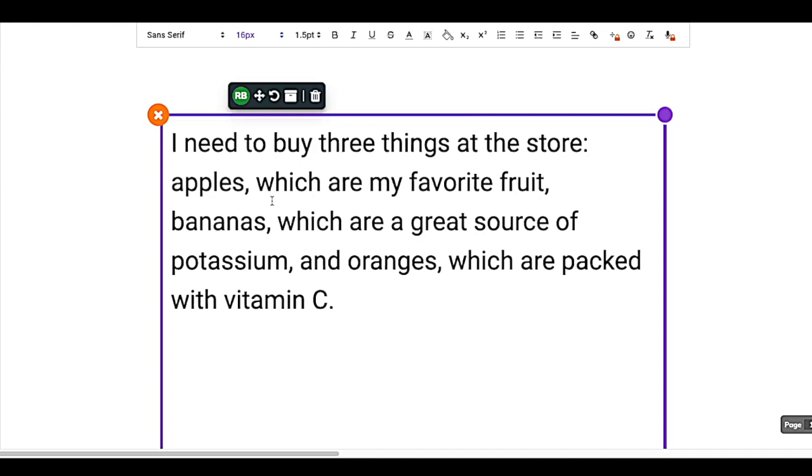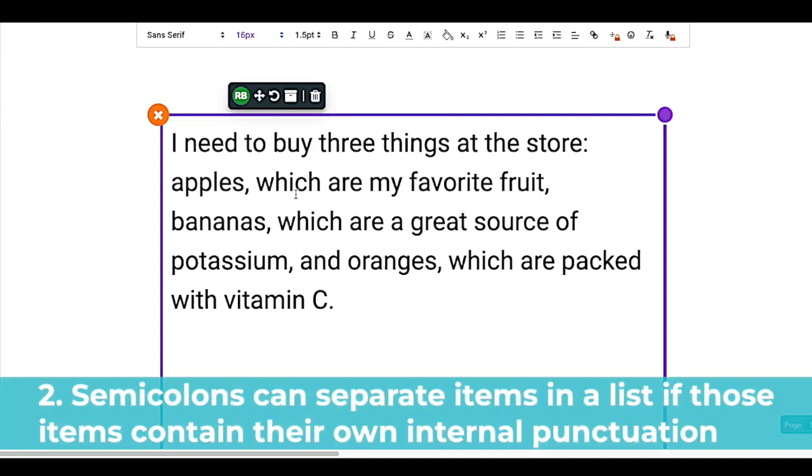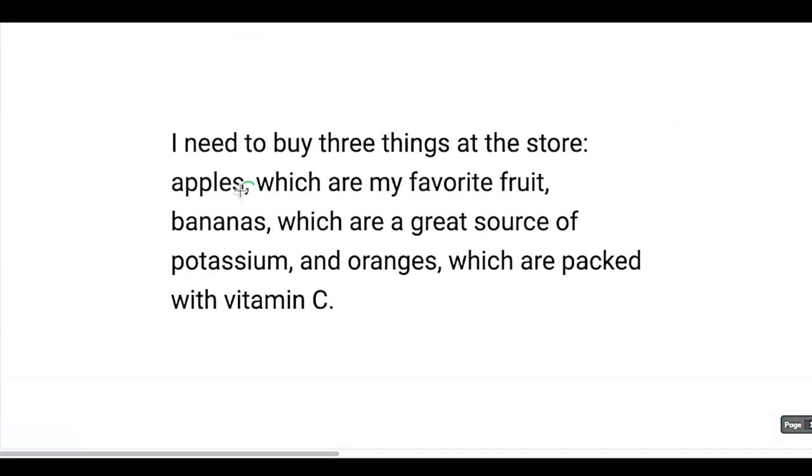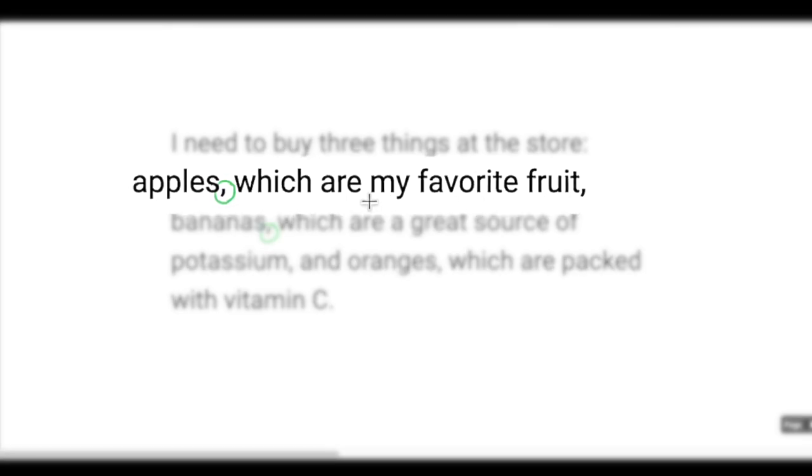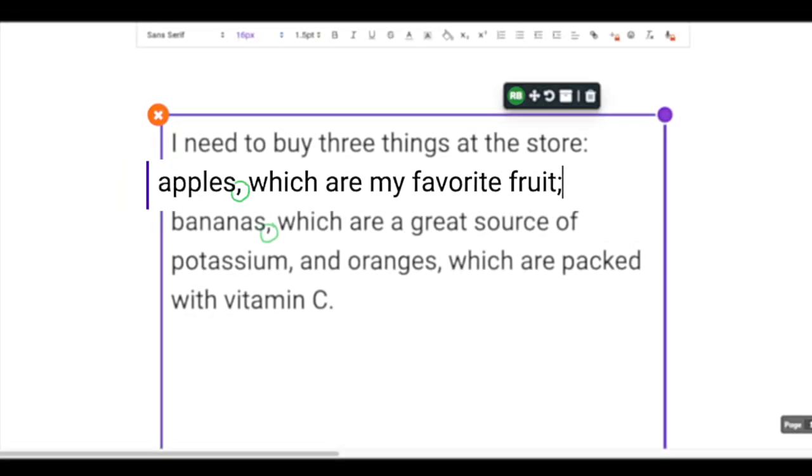So in this case, we can employ the second semicolon rule, which is you are allowed to use semicolons to separate items in a list if those items contain their own internal punctuation. So what do I mean by internal punctuation? Every item in this list has a comma already. So our first item is apples, comma, which are my favorite fruit. Because that comma is a part of the item itself, that counts as internal punctuation. Boom. Change that to a semicolon.